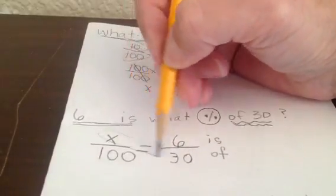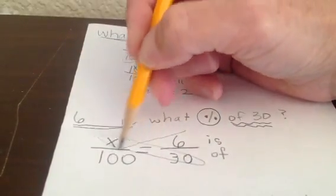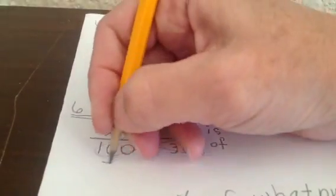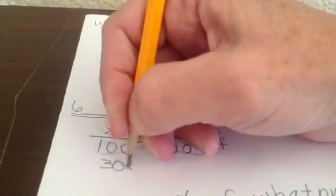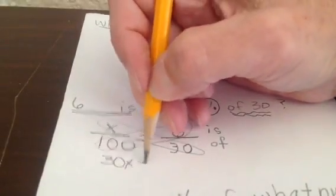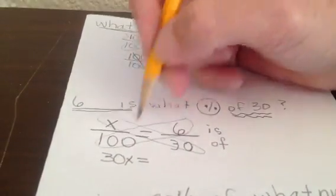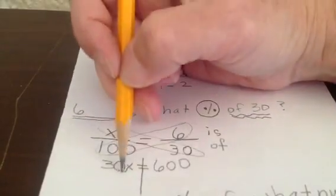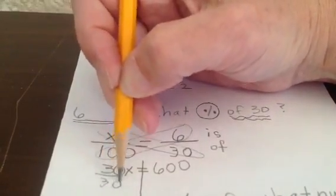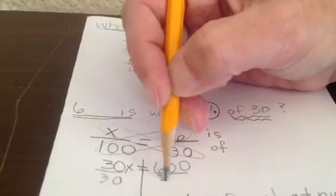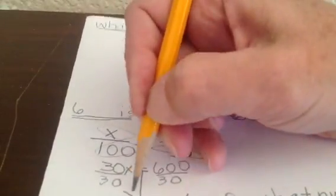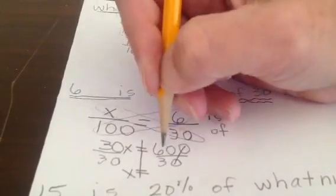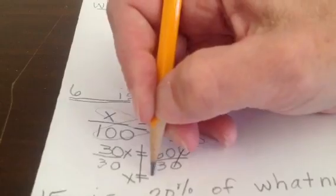And now they circle this way lightly so that they can still see the numbers. And now we solve it. Thirty times x is going to be 30x equals six times a hundred is six hundred. Now we're going to solve for x, divided by thirty, thirty divided by thirty. And of course I ran out of room. We're going to have x equals sixty divided by three is twenty.